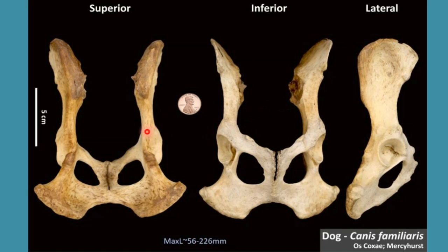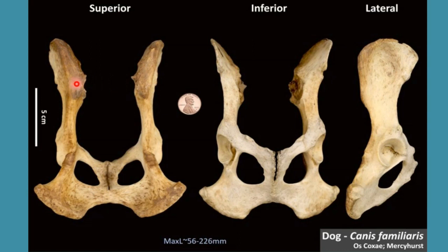Now let's talk about the borders of ilium. The first one is the cranial border, which is also known as the crest of ilium. This cranial border is in the form of an arc and it is more thick on the dorsal side than on its ventral side. So it is more thick on its dorsal side than on its ventral side.